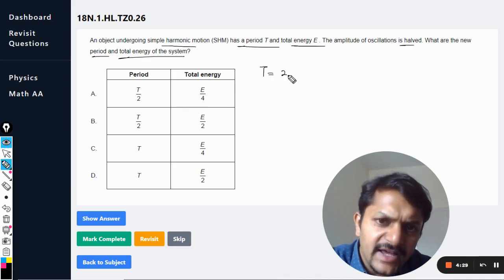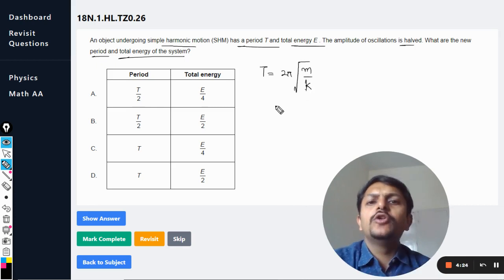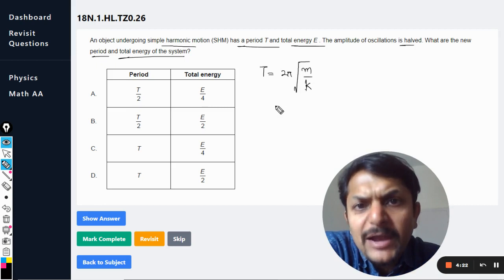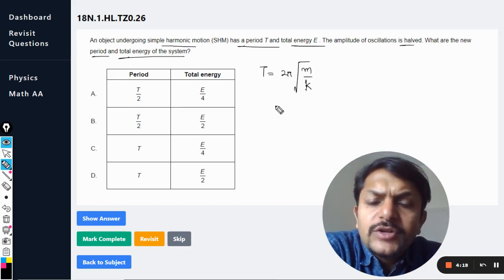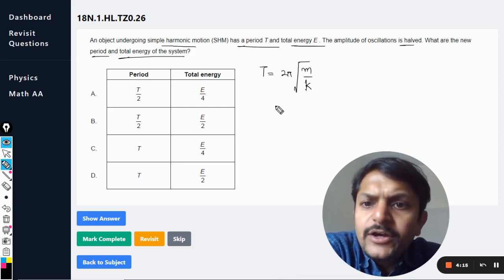So we know that the time period is given as T = 2π√(m/k) in the case of mass-spring system. You can go for the spring pendulum, the simple pendulum system also, and it would be time period equal to 2π√(l/g) accordingly.